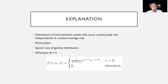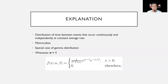First of all, we will go to the explanation of the exponential distribution. The definition of the exponential distribution is the distribution of time between events that occur continuously and independently at a constant average rate. Exponential distribution is memoryless, which means that past events do not affect the distribution.